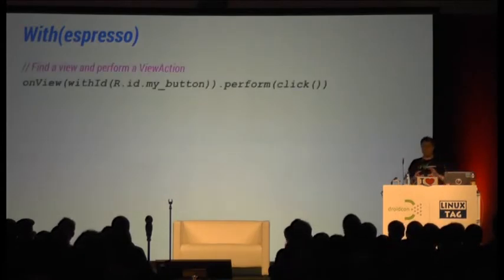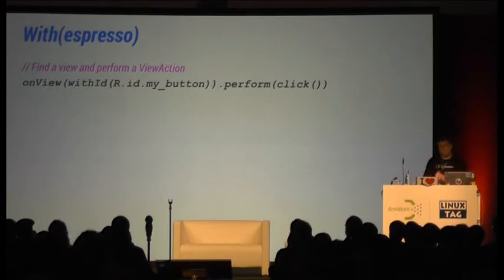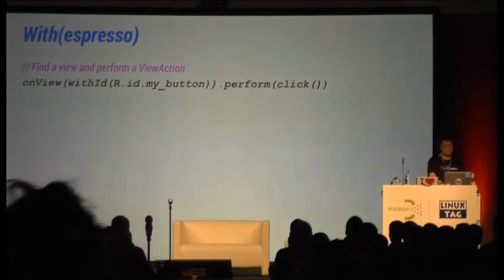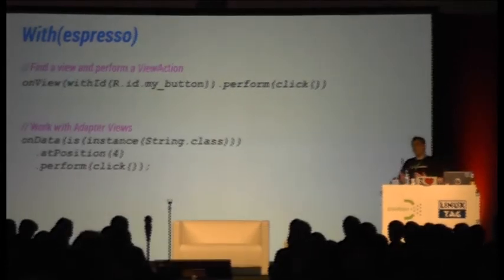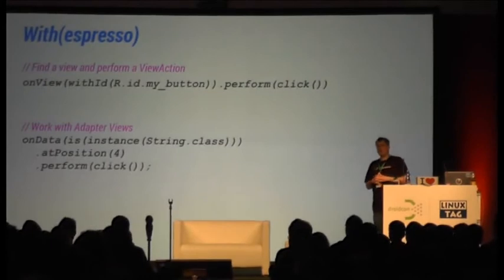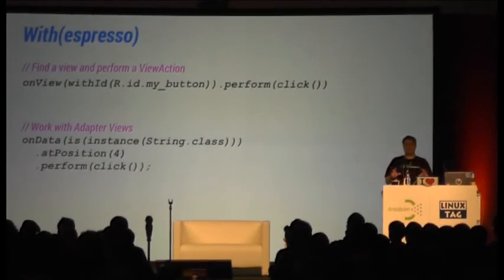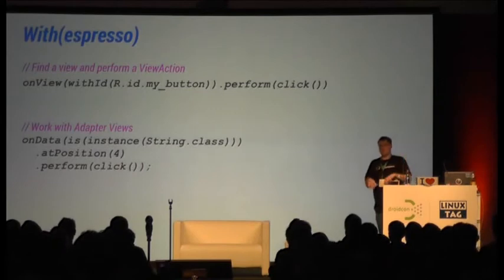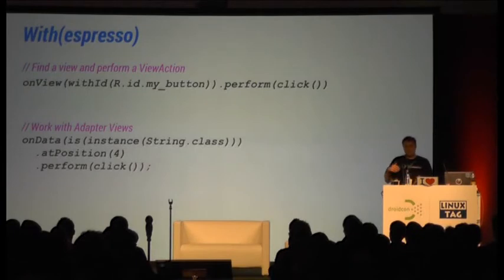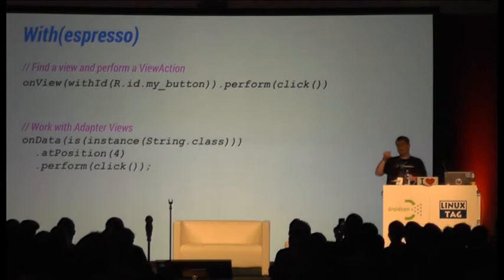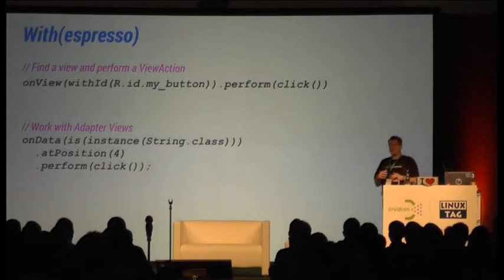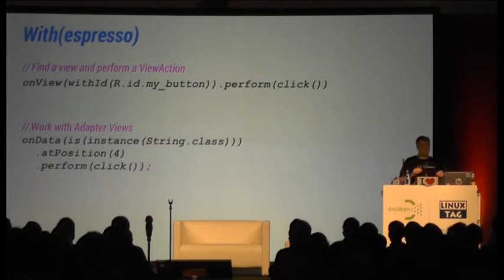With Espresso, you normally do three things. One is you find a view and perform a view action on it — pretty easy. Another thing is working with adapter views, since most screens are backed by adapters. If you have a grid view or list view, you always use an adapter in the background. Espresso has a nice way of solving that: it allows you to match on a set of data — for instance, find a specific item in a list of strings and click on it at its position.